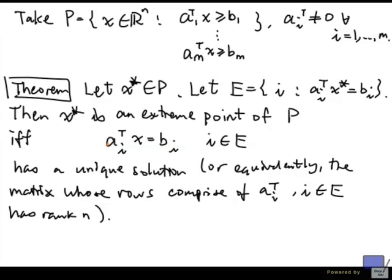It's easy to see that this system has a unique solution if and only if the matrix whose rows comprise of Ai transpose has rank n, because there are n variables. In order to have a unique solution, you need the coefficient matrix to have full column rank. And the column rank is the same as the rank of a matrix. So these two conditions are equivalent.